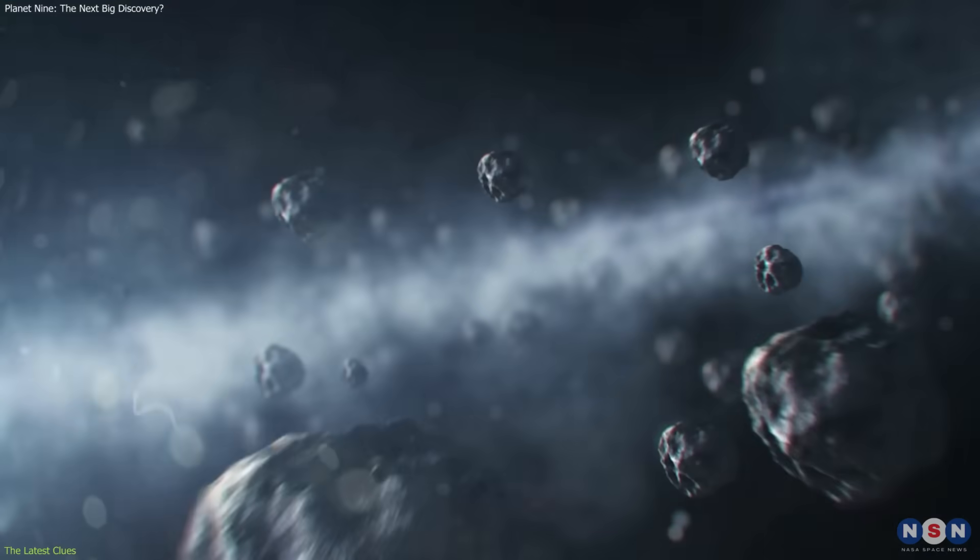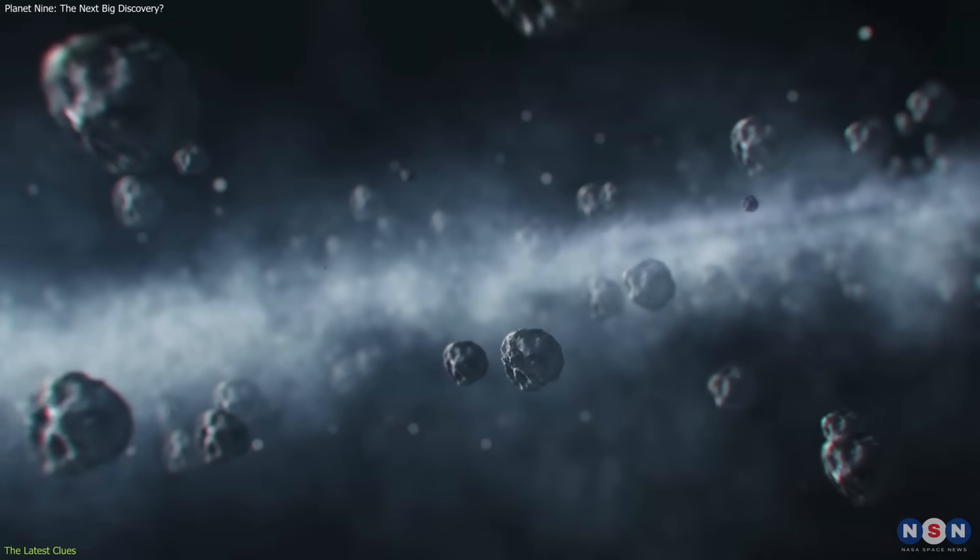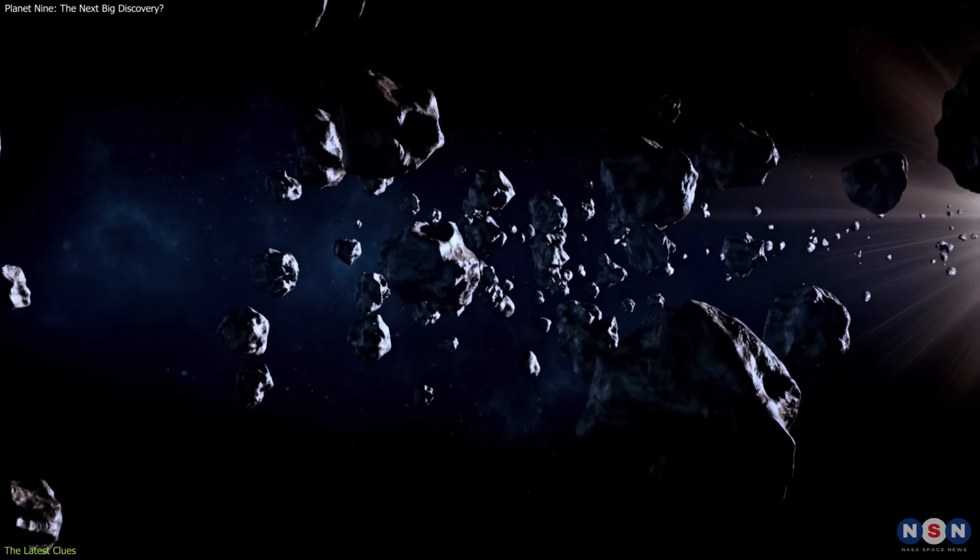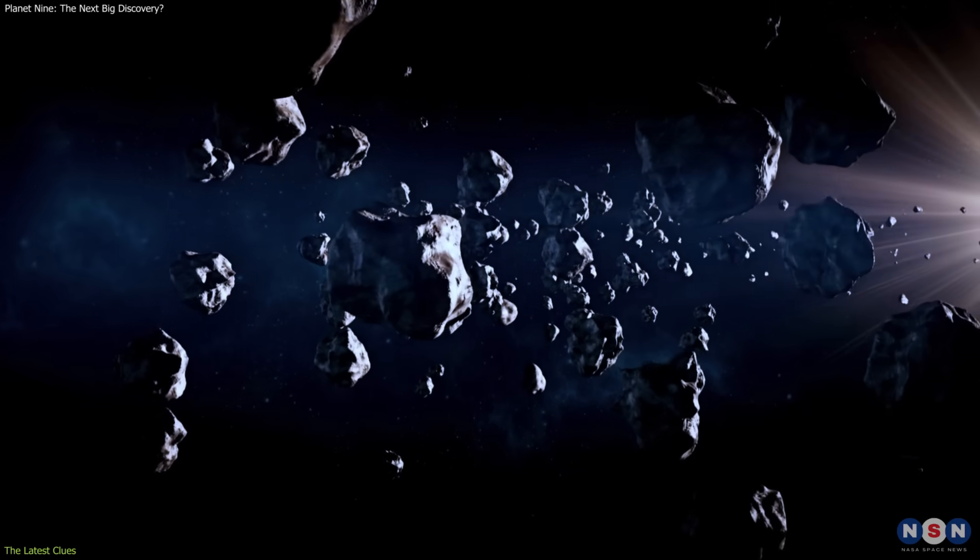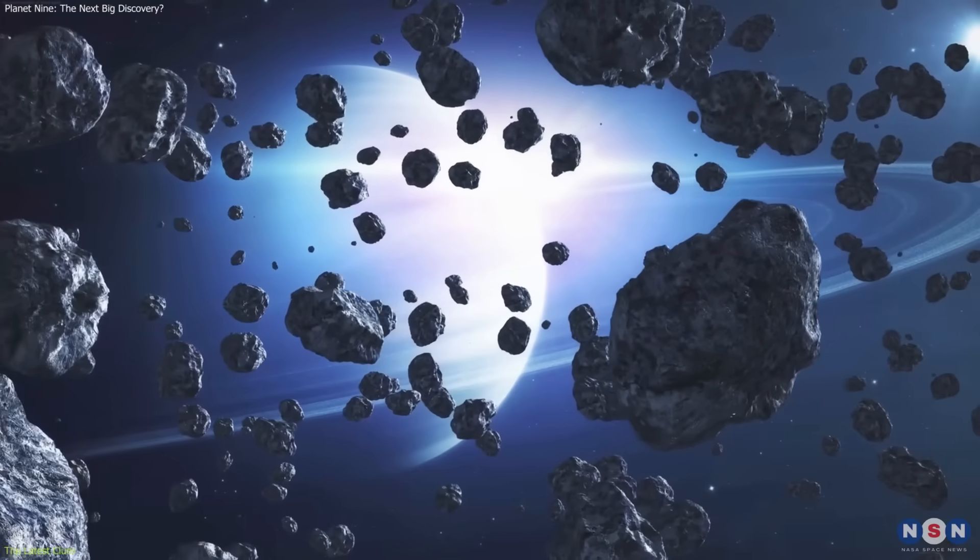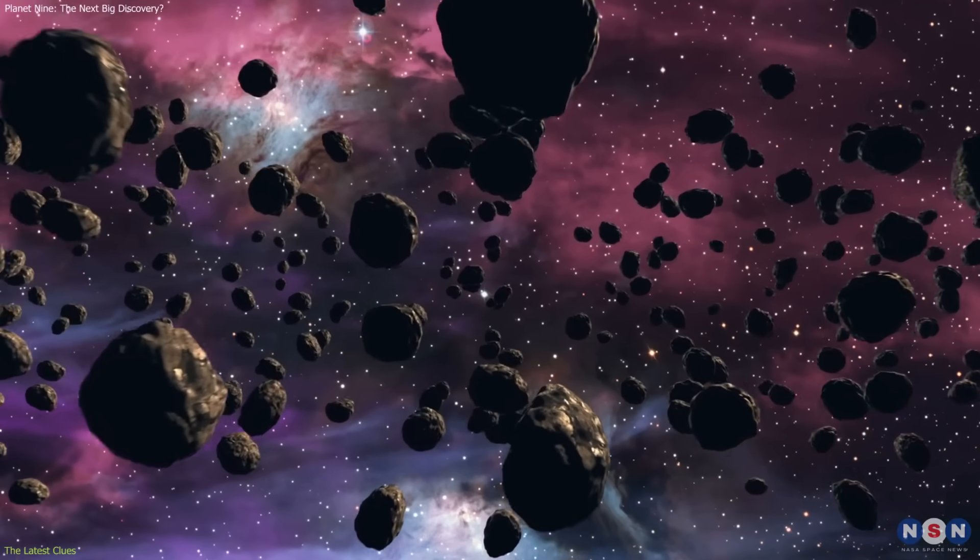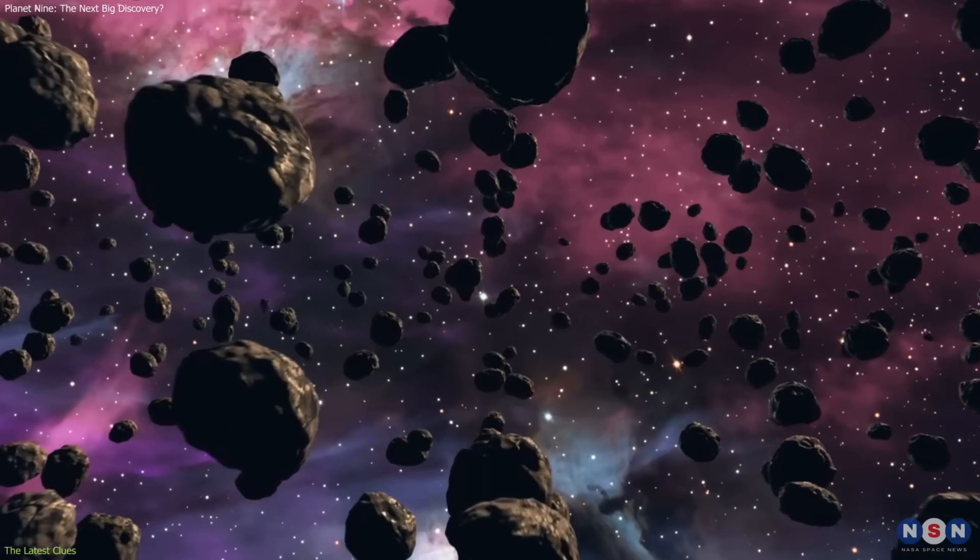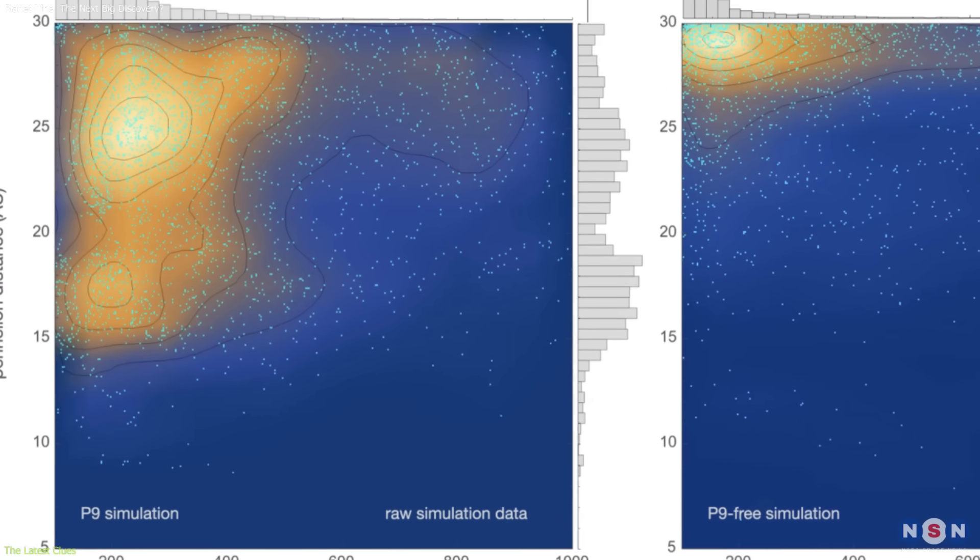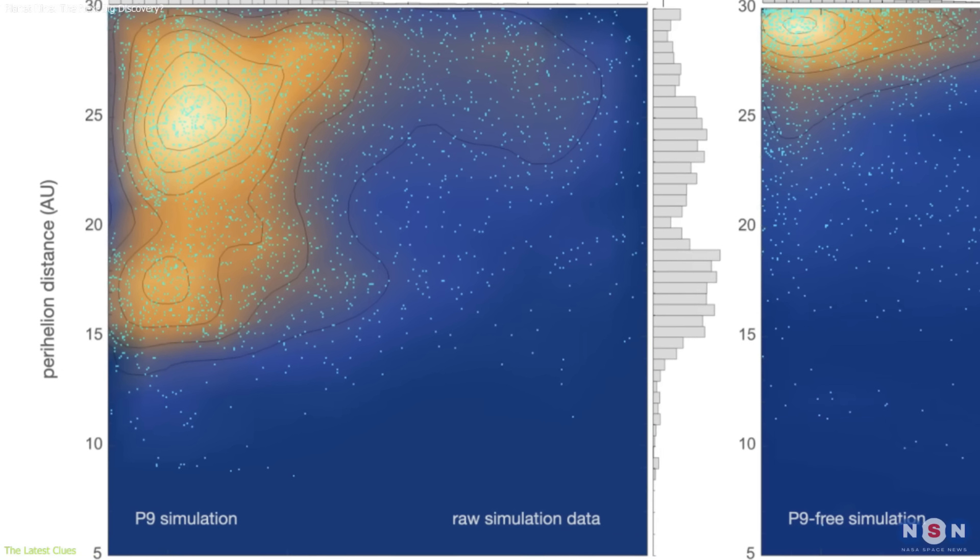Astronomers tracking the motions of distant icy bodies found subtle anomalies, small accelerations, and deviations from expected paths. These shifts could not be explained by Neptune, random collisions, or galactic tides. Yet when an additional unseen planet was added to the models, the anomalies suddenly fit.